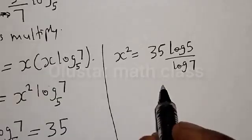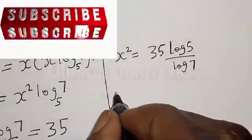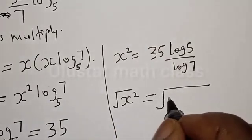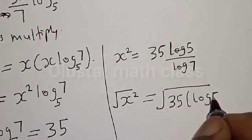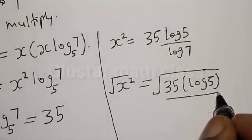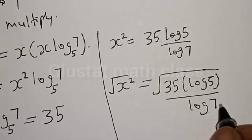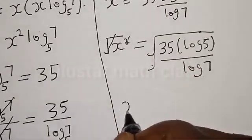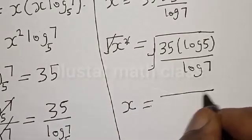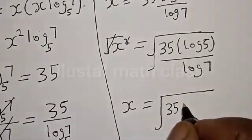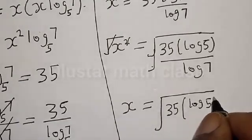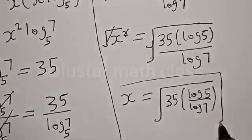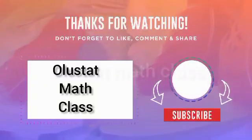Let's take the square root of both sides. We have square root of x squared is equal to square root of 35 log 5 divided by log 7. Therefore our final answer is x is equal to the square root of 35 times log 5 divided by log 7. If you enjoyed the class, please don't forget to like, share, comment and subscribe. Thank you.